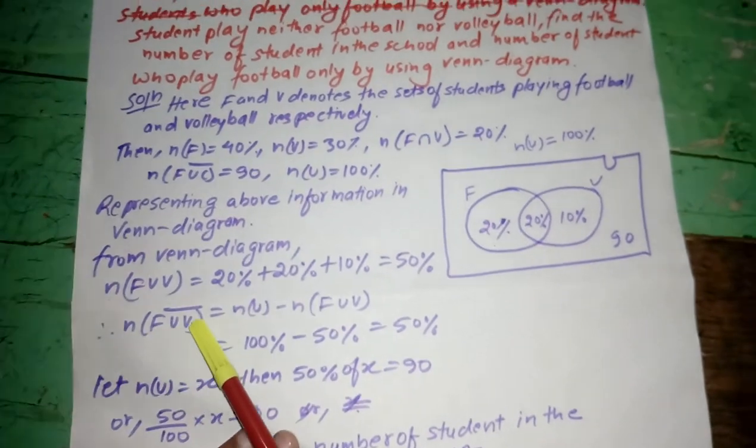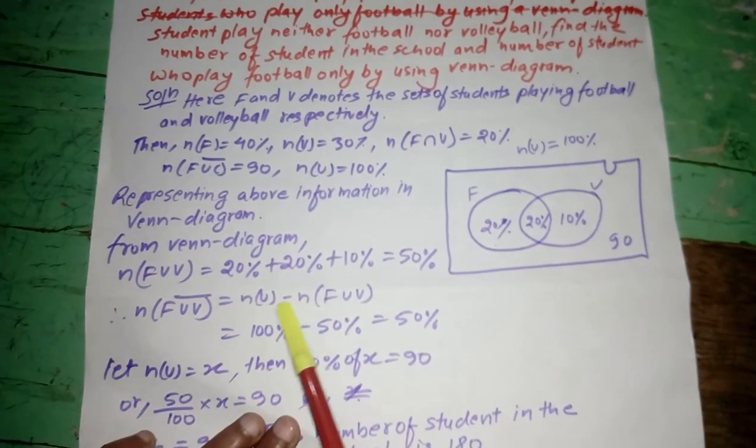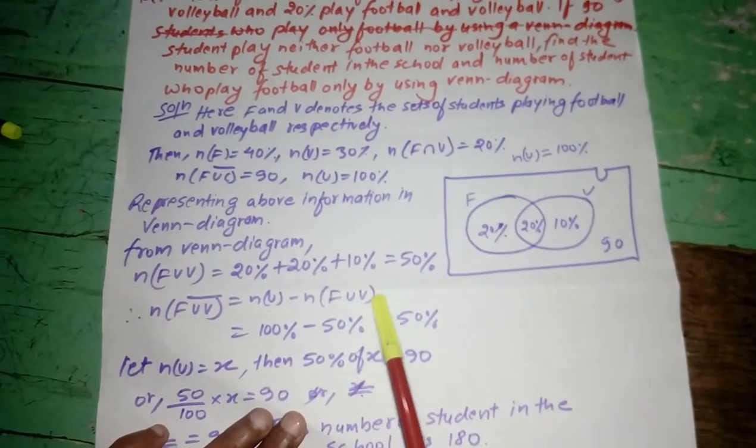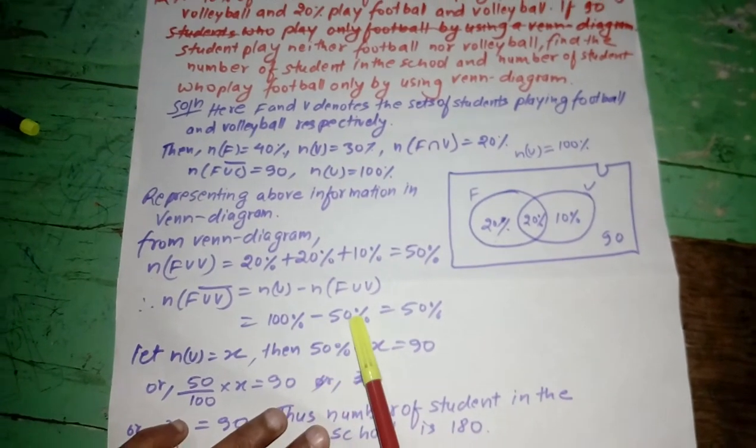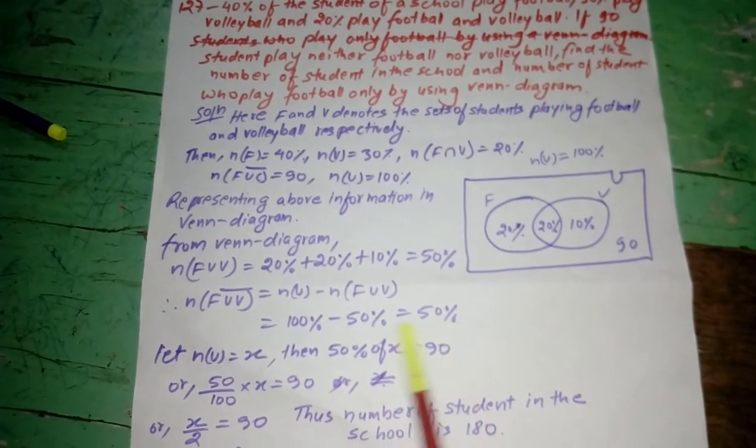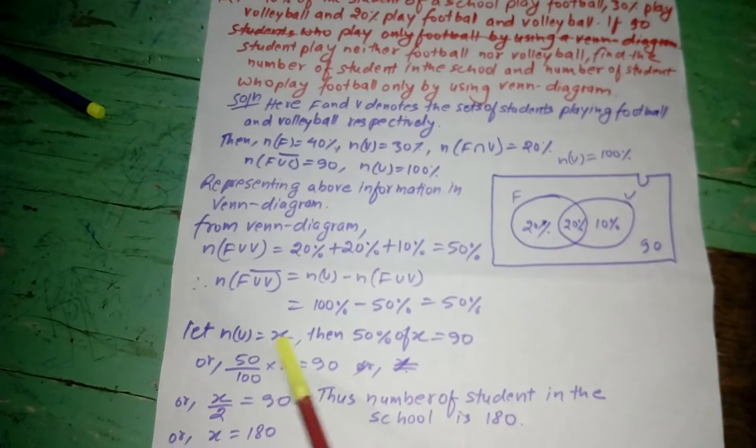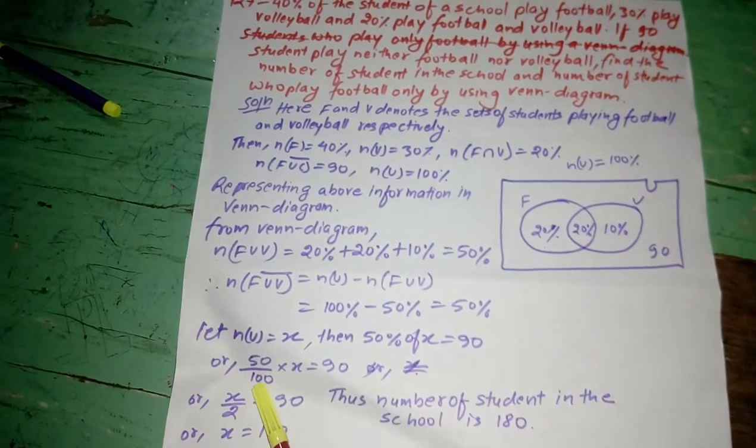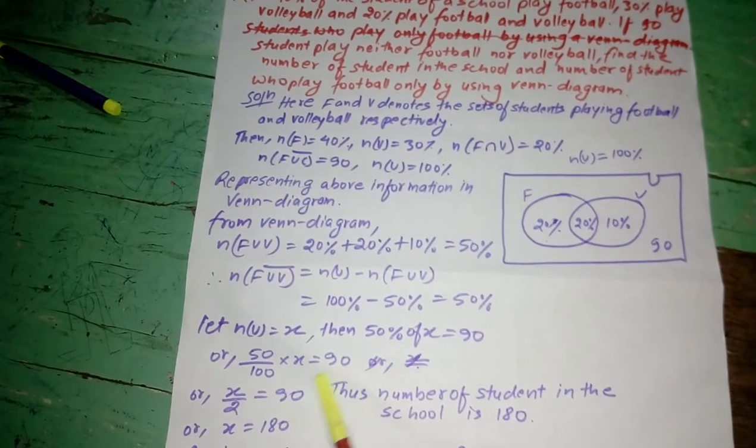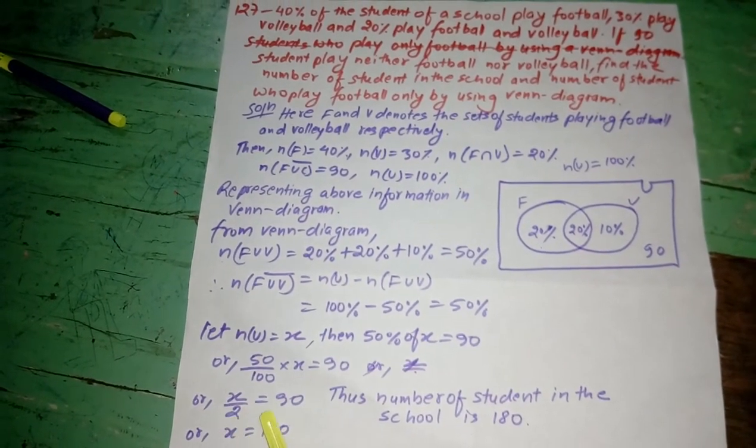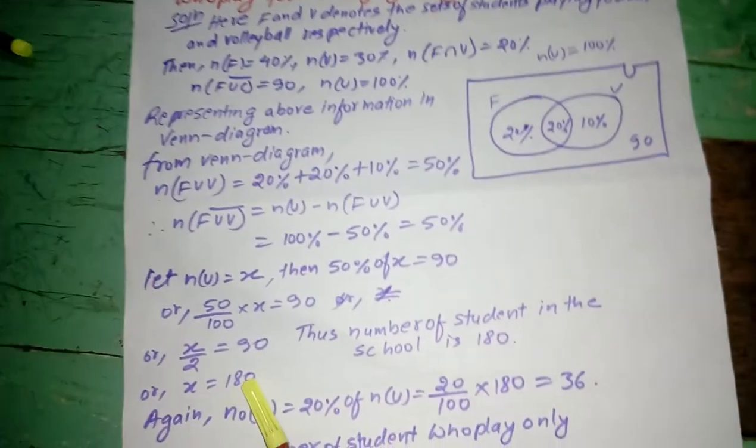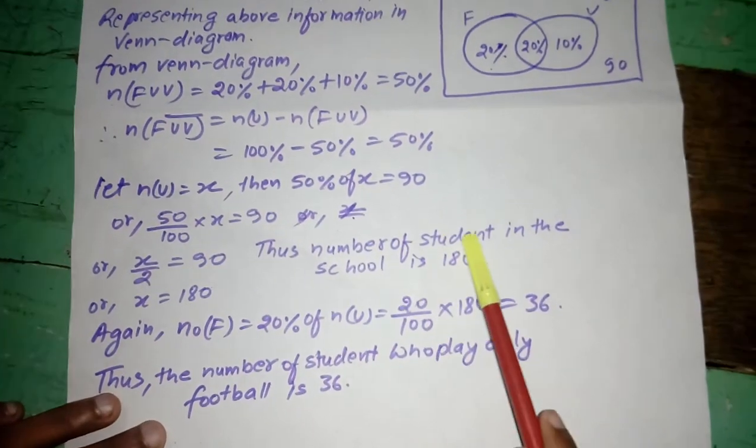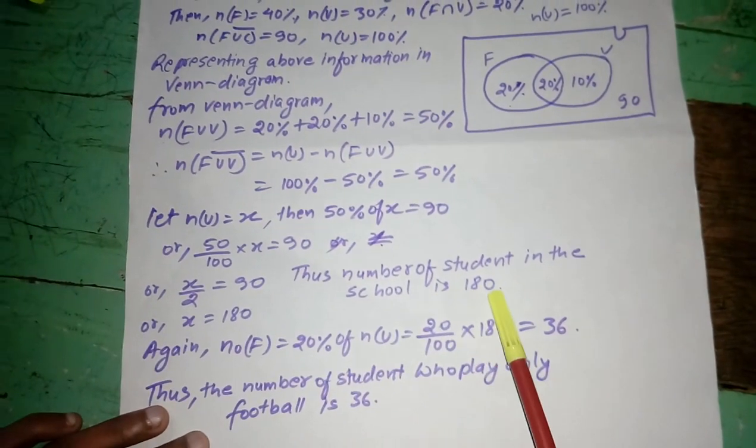And n(F∪V)complement is equal to n(U) minus n(F∪V). 100% minus 50% is equal to 50%. Let n(U) is equal to X. Then 50% of X is equal to 90. Or 50 by 100 into X is equal to 90. Or X by 2 is equal to 90. X is equal to 180. Thus, number of students in the school is 180.